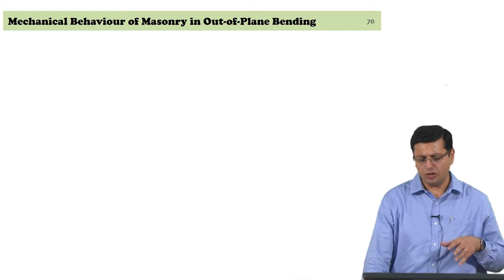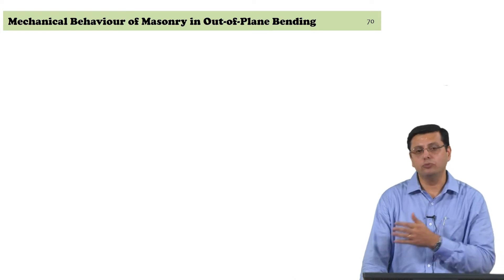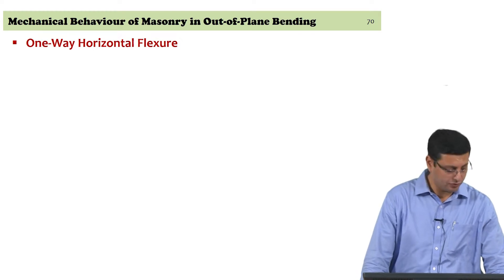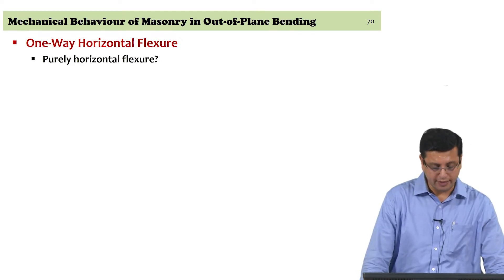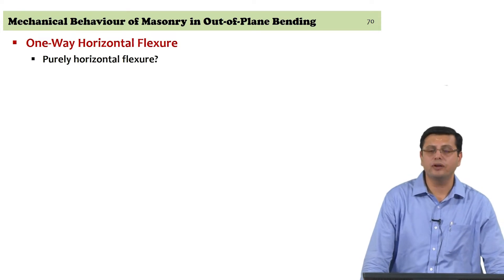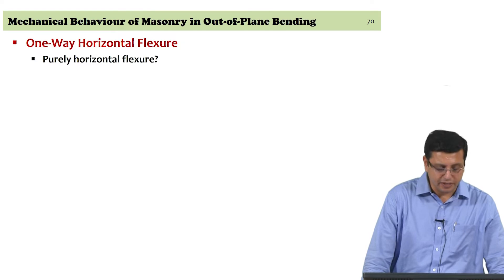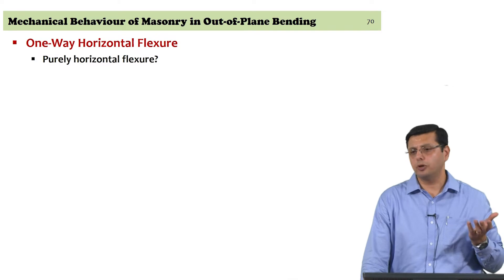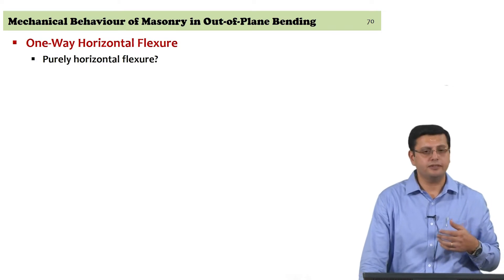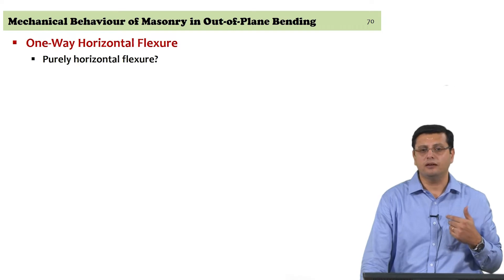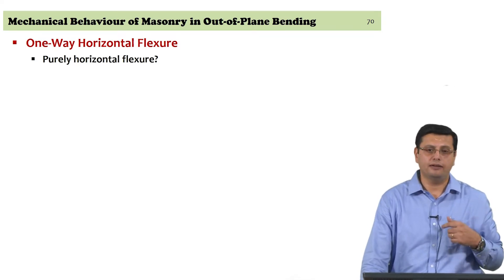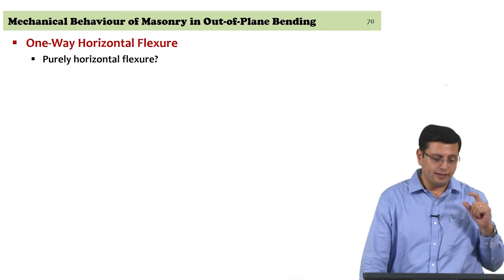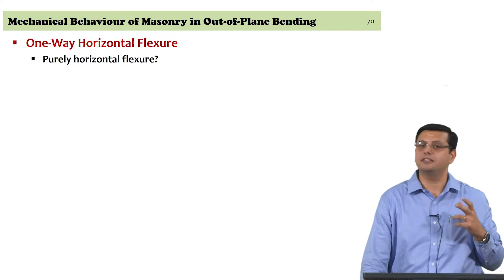To sum up horizontal bending, vertical bending one way, and then moving on to two-way bending, we will examine the next set of course content. As far as one-way horizontal flexure is concerned, the question is: would you get purely horizontal flexure? It is an idealization. You will always have some effect of the bottom restraint, if not both the bottom and the top restraint.